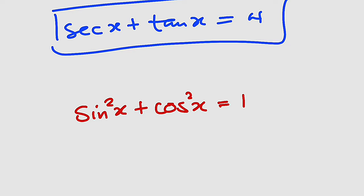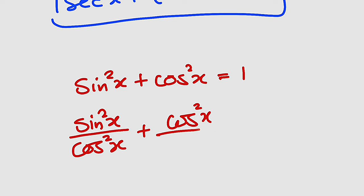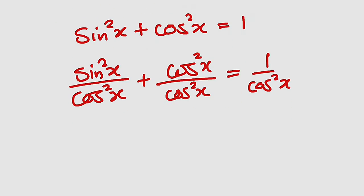We can divide both sides by cosine squared x. So we have sine squared x divided by cosine squared x plus cosine squared x divided by cosine squared x equals 1 divided by cosine squared x. Since sine over cos is tangent, we have tan squared x plus 1 equals secant squared x.